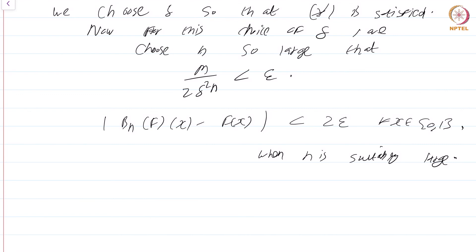The proof of the Weierstrass approximation theorem ultimately relies on the uniform continuity of f and the basic properties of the Bernstein polynomials. For those x close to some k/n, uniform continuity alone is enough. For those points where |k/n − x| is somewhat large, we use the basic properties of the Bernstein polynomials. Combining both parts gives the proof. This is a course on real analysis and you have just watched the module on the proof of the Weierstrass approximation theorem.